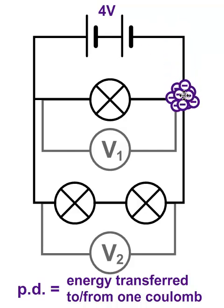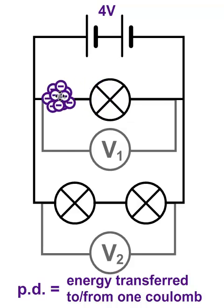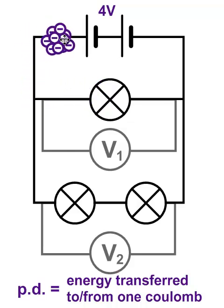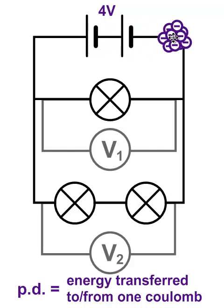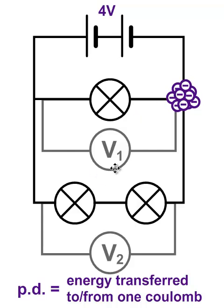If the charge goes through the middle branch, it's only got one place to give that energy up — that's at the bulb. So the bulb is going to get four joules of energy. Then as the charge goes back through the cells it gains four joules of energy again, so it's got another four joules of energy to give up. If four joules of energy is given up in this branch, the potential difference across that branch is four volts.